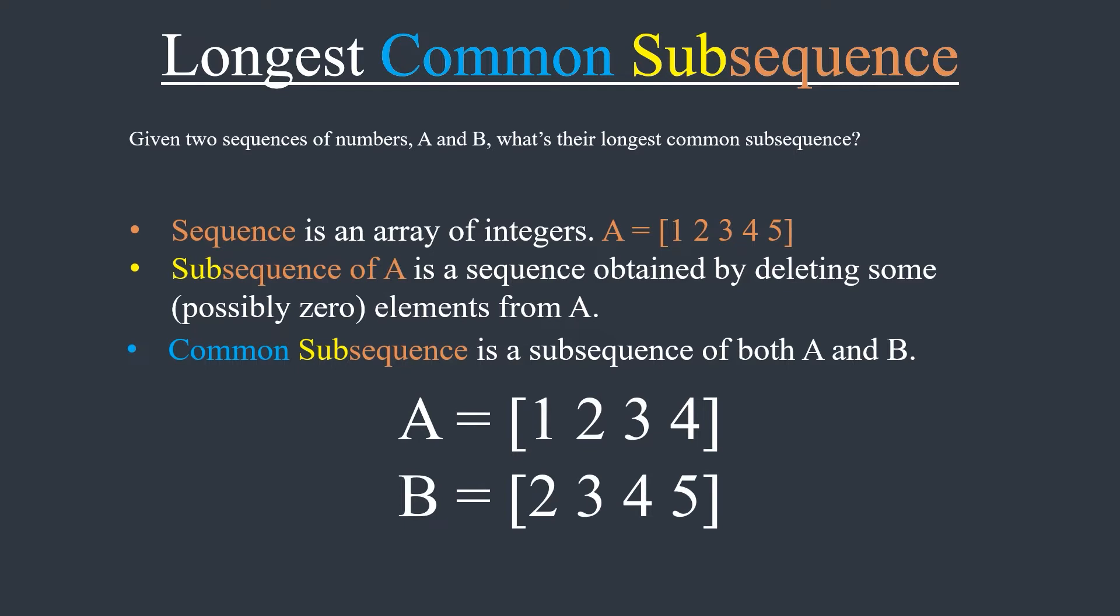Would you say that the sequence 1, 2, 3 is a common subsequence for these two arrays? It is a subsequence of A because we can obtain it by deleting 4. But it is not a subsequence of B because 1 doesn't exist in B.